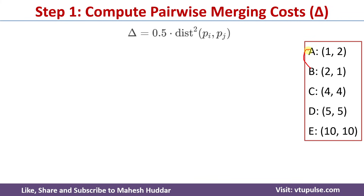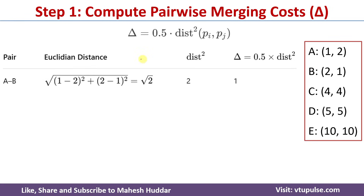First, I will do the A and B pair. For this pair, the Euclidean distance equals the square root of (x1 minus x2) squared plus (y1 minus y2) squared, which is square root of (1 minus 2) squared plus (2 minus 1) squared. The square root of 2 is the Euclidean distance, and distance squared is 2. So delta equals 0.5 times 2, which equals 1.